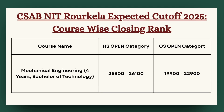Next for Mechanical Engineering, the cutoff can be expected between 25,800 to 26,100 for HS category, and for OS category the cutoff can be expected less than 22,900.